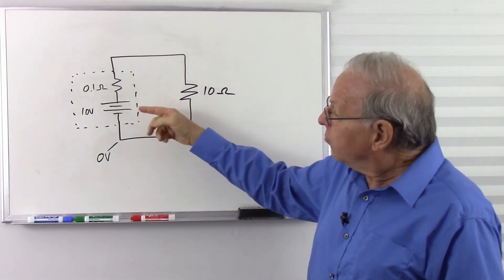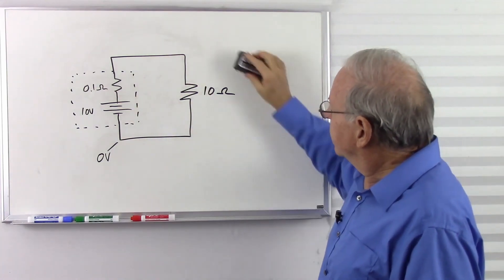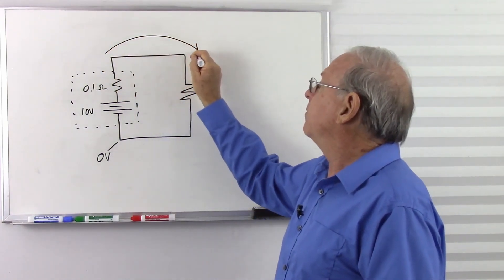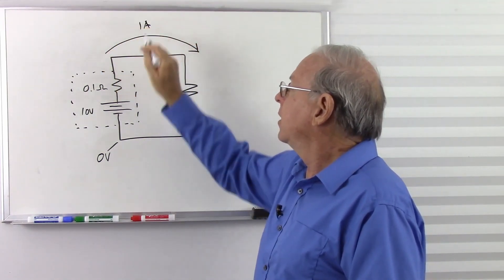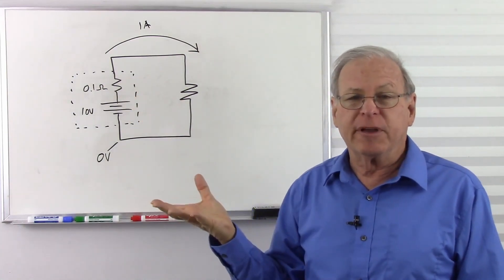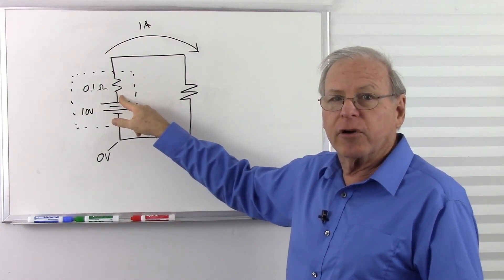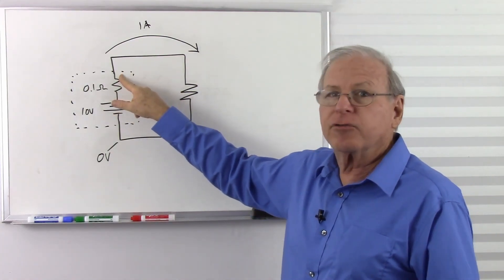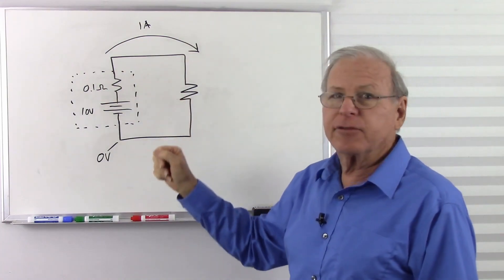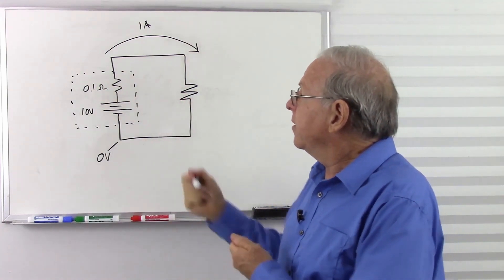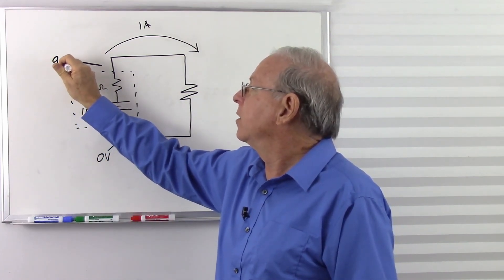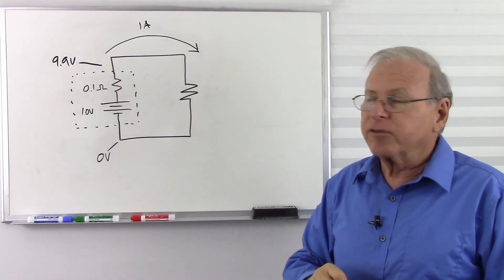What's going to happen when I take current from this? Let's assume I'm taking 1 amp. We have current going through this internal resistance, so there's going to be a voltage difference across it — higher voltage where current enters, lower voltage where conventional current exits. By Ohm's law: 0.1 ohms times 1 amp gives us a tenth of a volt. So by the time I get out of this battery, I've already lost a tenth of a volt, down to 9.9 volts.